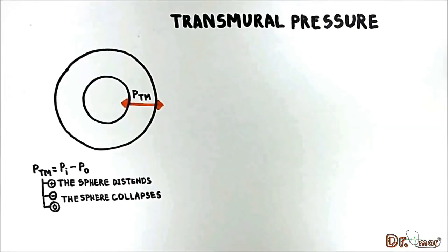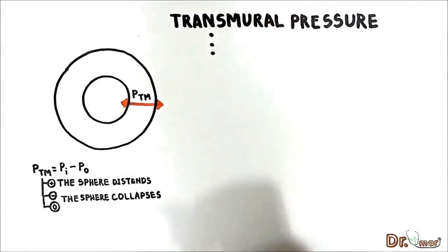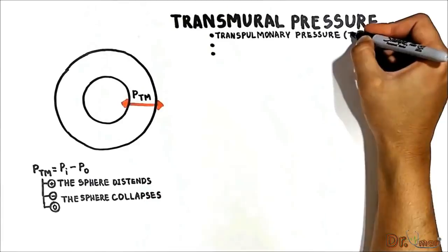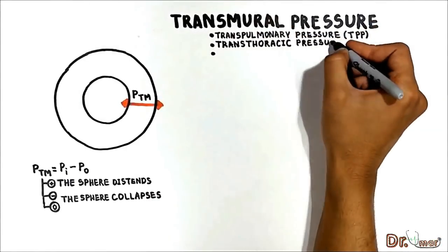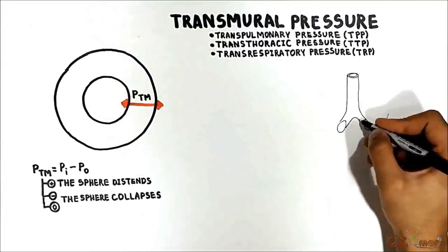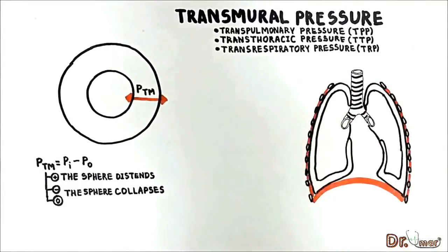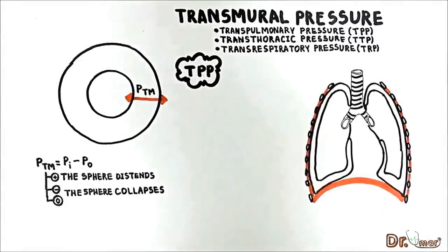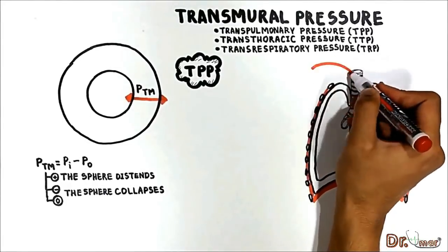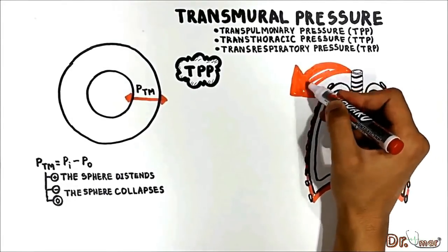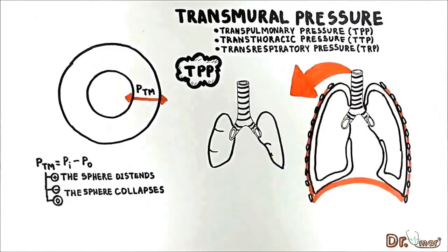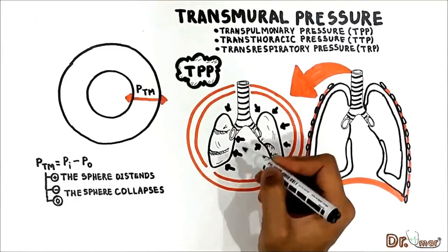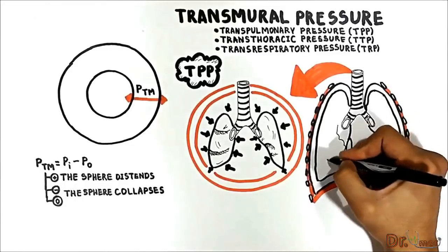There are three important transmural pressures in the lung system which you should know: transpulmonary pressure, transthoracic pressure, and trans respiratory pressure. Let us first see what transpulmonary pressure is. It is very important to note that the lung is very elastic tissue. If I expose the lung outside of the chest cavity, the lung will shrink and collapse.